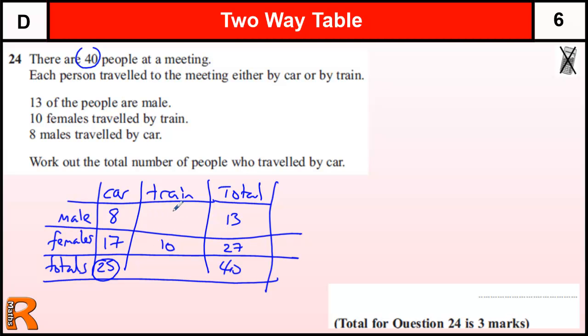But it's always nice to finish these things off. So there should be five in there to make 13 going across. Car and train. That means there's 15 people on the train. And everything tallies up. 25 and 15 makes 40. So there are 25 people that travel by car.